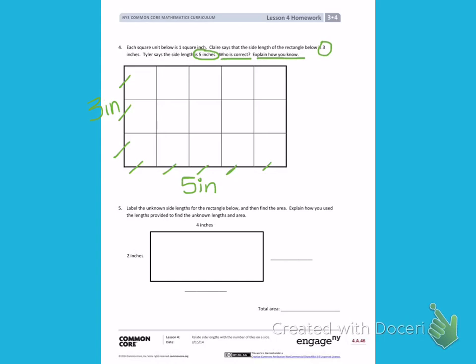Label the unknown side lengths of the rectangle below, and then find the area. Explain how you use the lengths provided to find the unknown length and area.